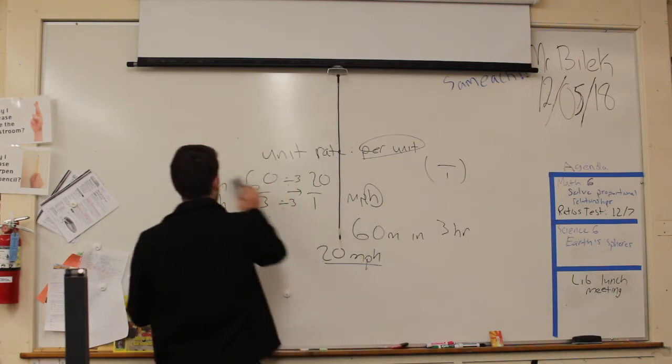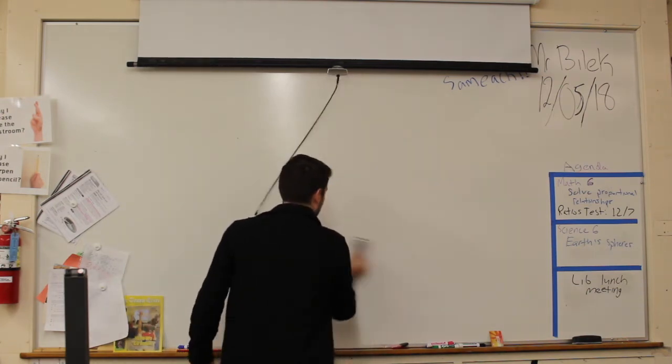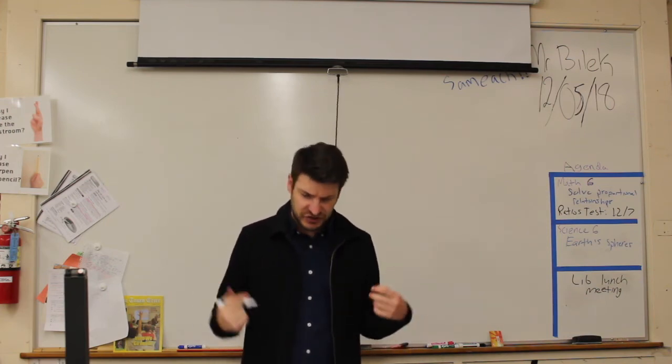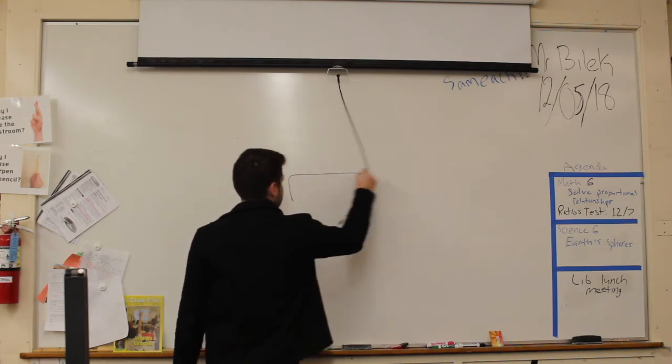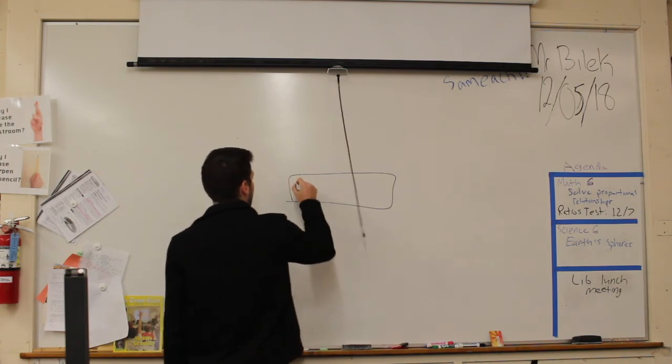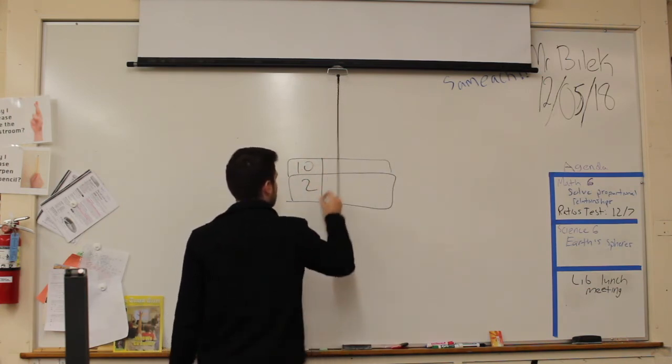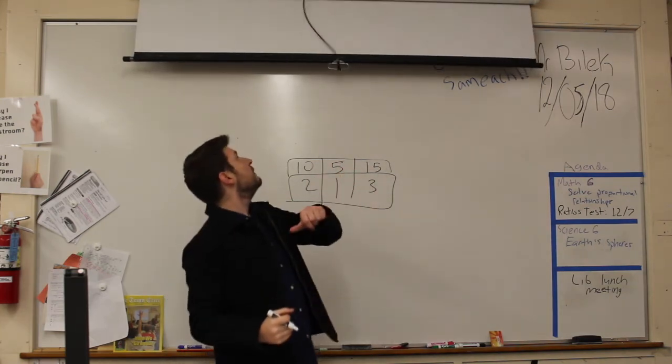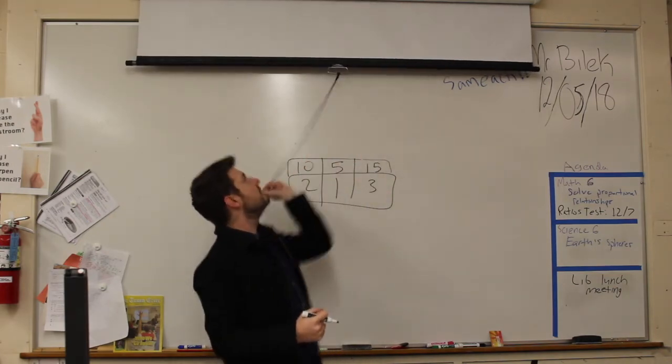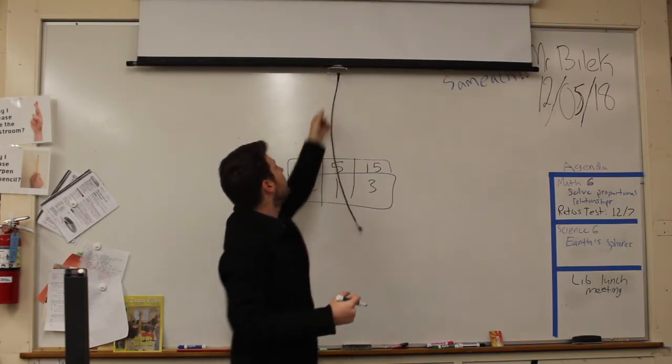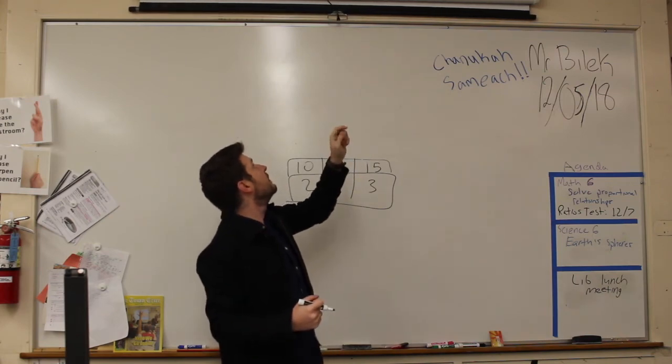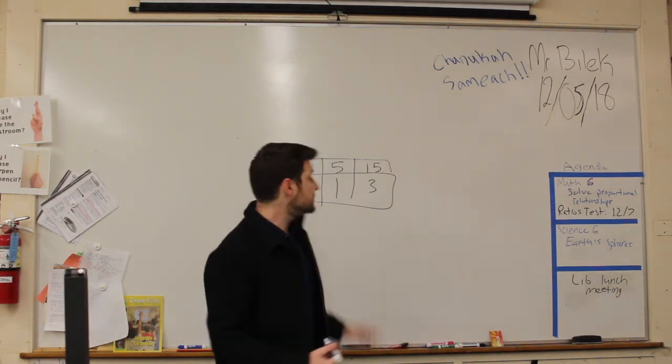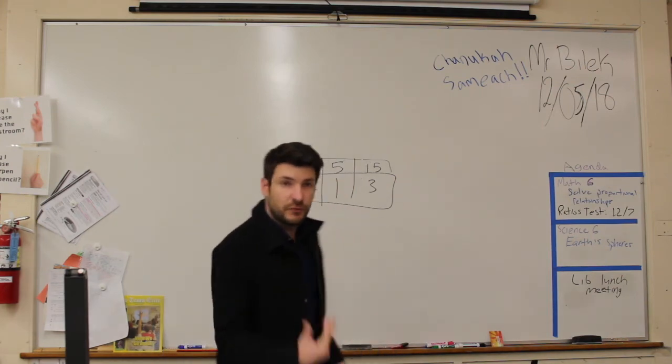Now, a ratio table is where we take multiple ratios, and a ratio table is a way for us to organize a relationship between different ratios. So let's give an example. We have this ratio table, and I'm going to say 10 to 2, 5 to 1, and 15 to 3. We'll get rid of this guy. So, this ratio table is comparing different ratios and helping us organize that.